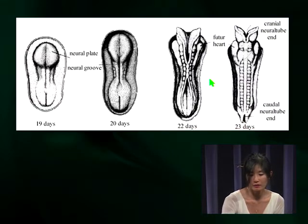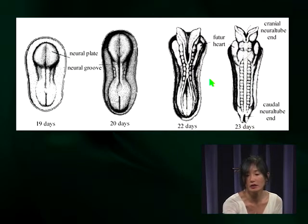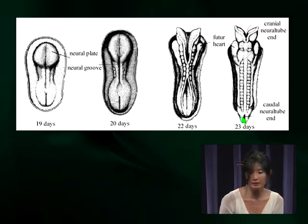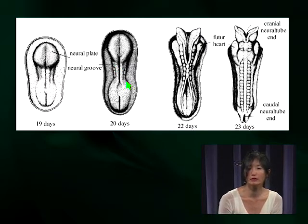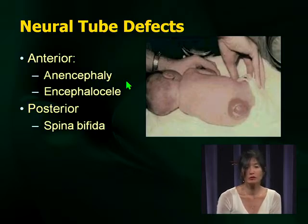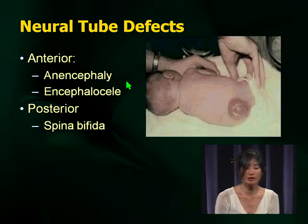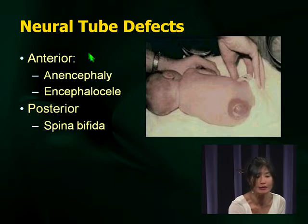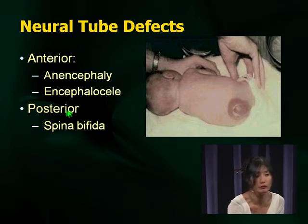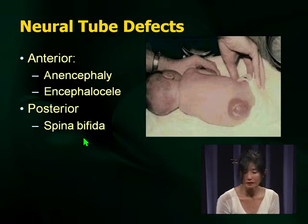This gives you an anatomical sense of why things happen with neural tube defects. Early you have the neural plate forming, then a neural groove, then closure of the caudal and cranial ends. Neural tube defects are divided into anterior and posterior defects. Anencephaly and encephalocele are anterior defects, whereas the posterior defect you need to know is spina bifida.